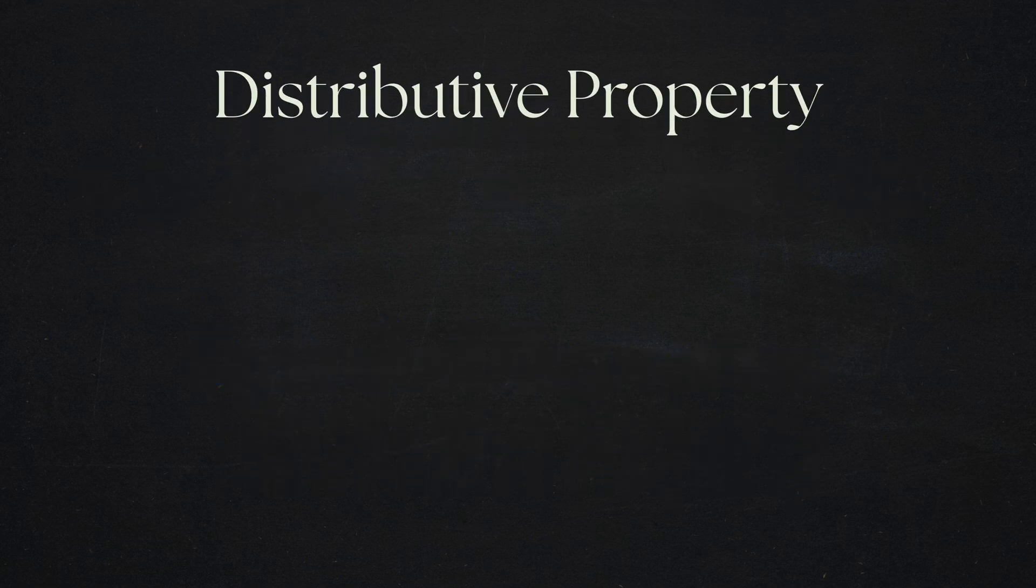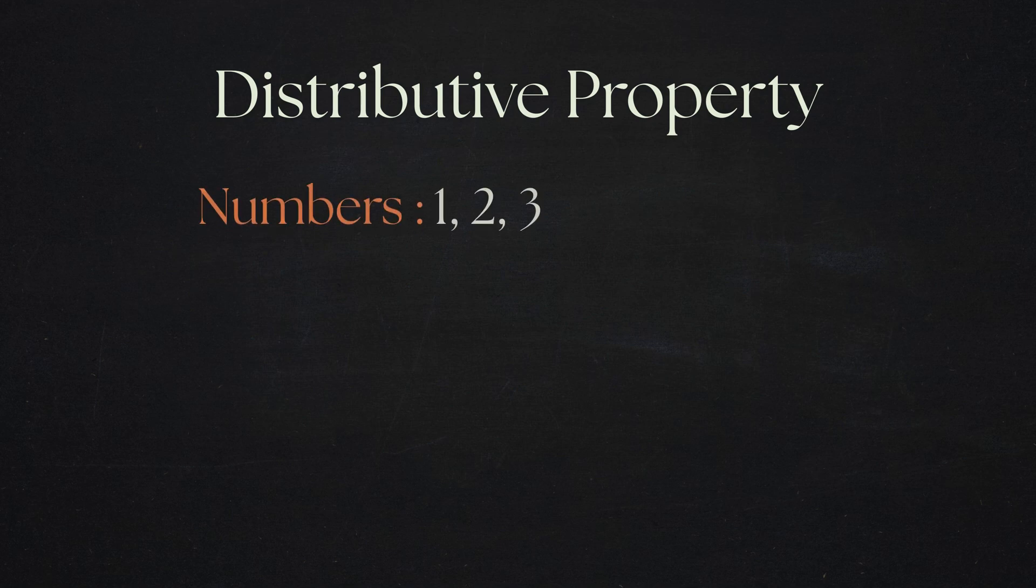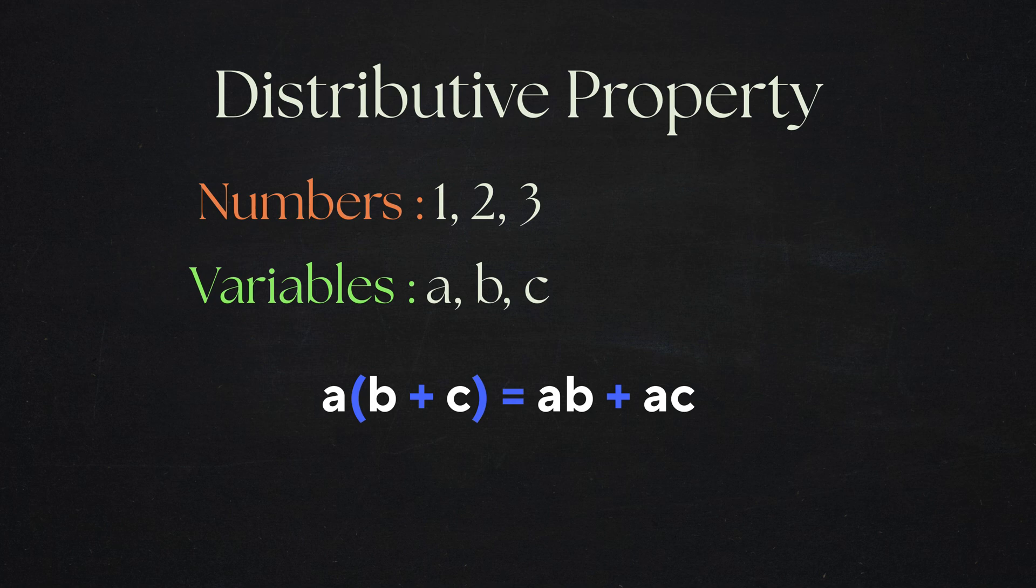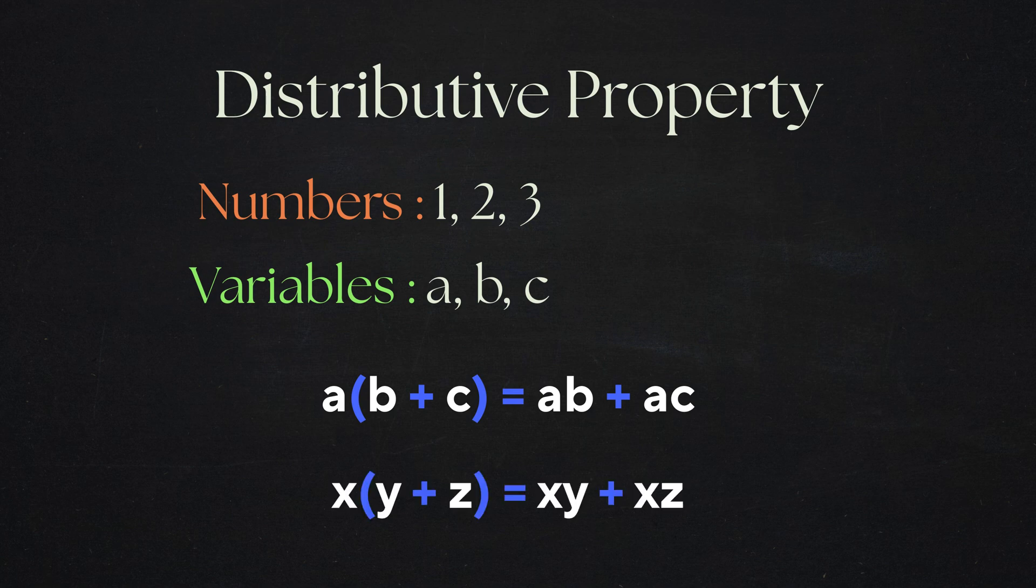The distributive property works exactly the same whether you're dealing with numbers or variables. You'll often see the distributive property written in algebra as a times the group of b plus c equals ab plus ac. You might encounter different letters like x, y, and z, but the underlying pattern remains the same.